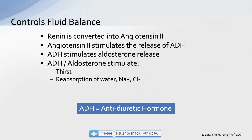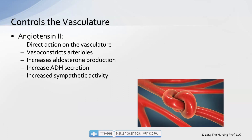Renin is converted into angiotensin 2, which stimulates the release of ADH — antidiuretic hormone. ADH means the patient is not diuresing; they are hanging onto fluid. If the patient lacks ADH, they will be diuresing. ADH also stimulates the release of aldosterone, and together ADH and aldosterone stimulate the reabsorption of water, sodium, and chloride in the kidney, and also stimulate thirst — two strong mechanisms to hang onto more fluid.